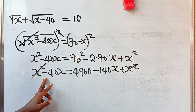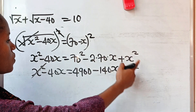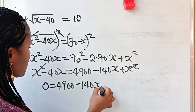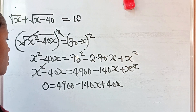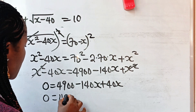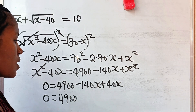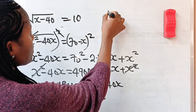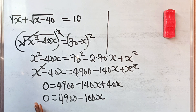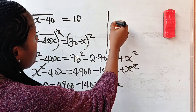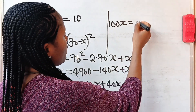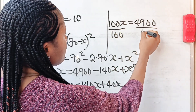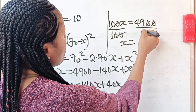Let's collect like terms. We have minus 40x on the left; taking it to the right gives us plus 40x. So 0 is equal to 4,900 minus 140x plus 40x, which simplifies to 0 equals 4,900 minus 100x. Transferring the minus 100x to the left, we have 100x is equal to 4,900. Dividing both sides by 100, we get x is equal to 49.